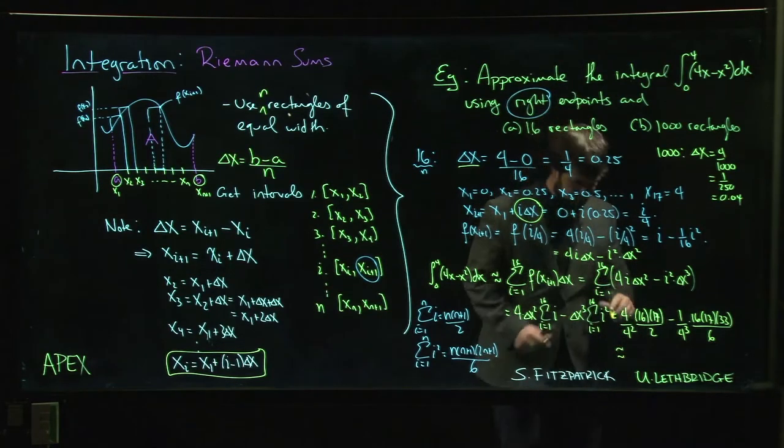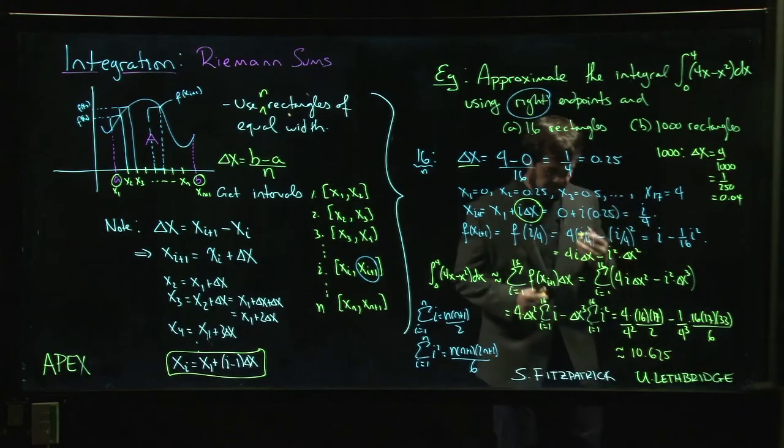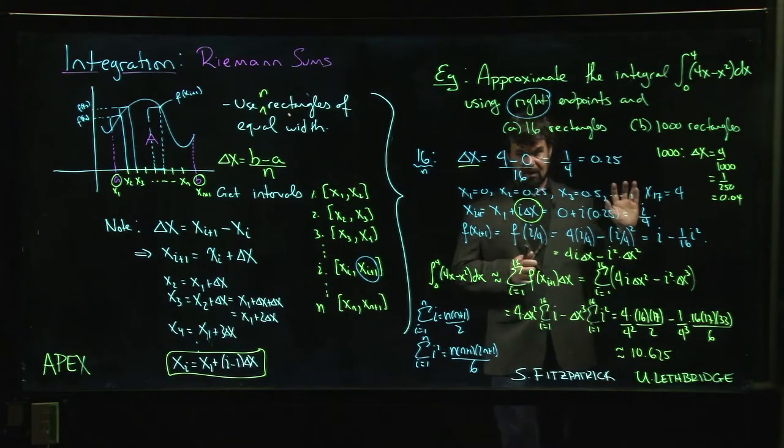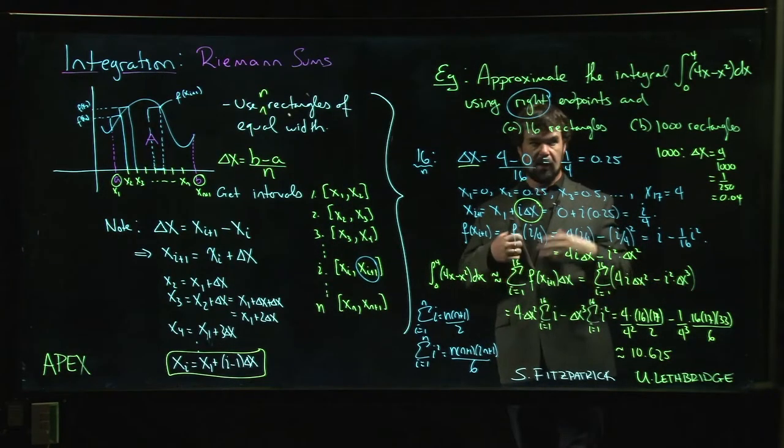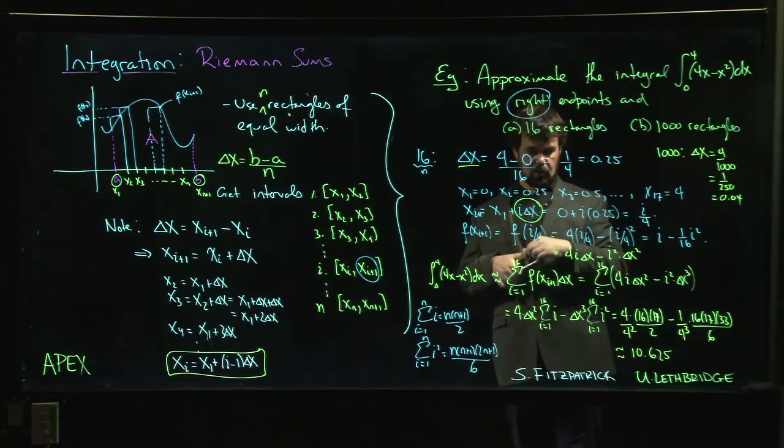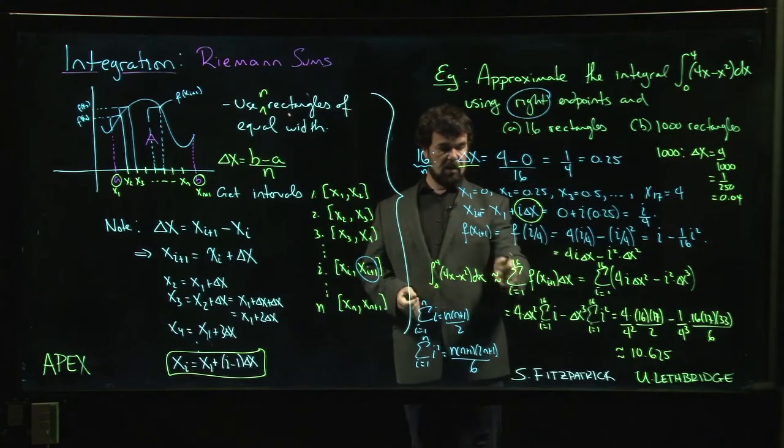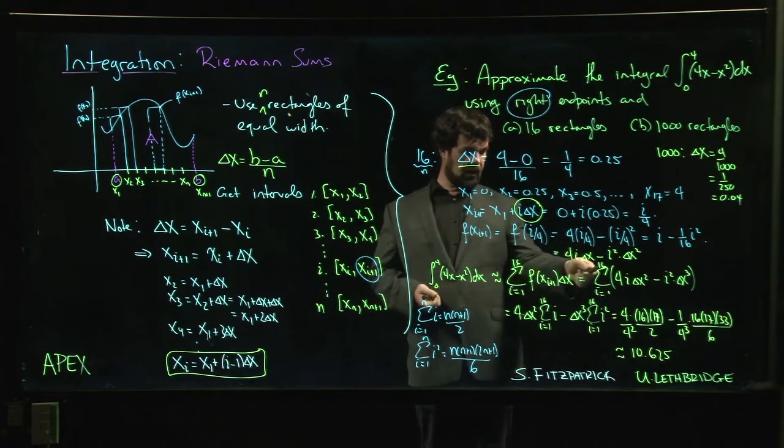If you work that all out, you get 10.625 as your approximation. I'll stop here because this video is getting a little bit long, but let's say you wanted to do 1000 rectangles—do it all over again. What do you have to change? Well, 16 becomes 1000. That's the only thing that you change here and here.